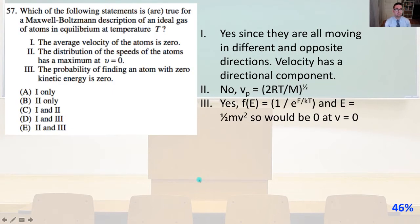Number 57, which of the following statements is, or are, true for a Maxwell-Boltzmann description of an ideal gas of atoms in equilibrium at temperature T? So number one, yes, since they are all moving in different and opposite directions, velocity has a directional component. The average velocity of the atoms is zero. For two, no,